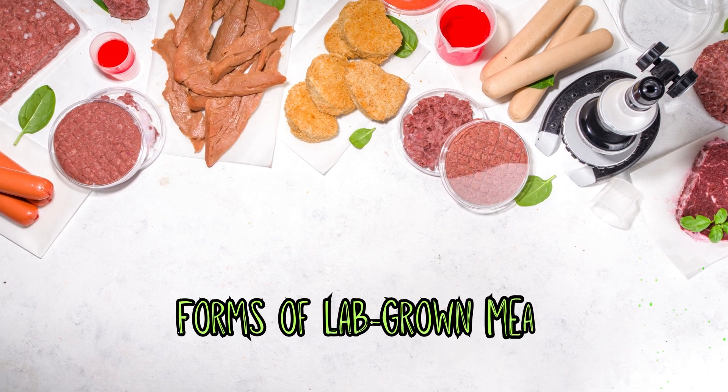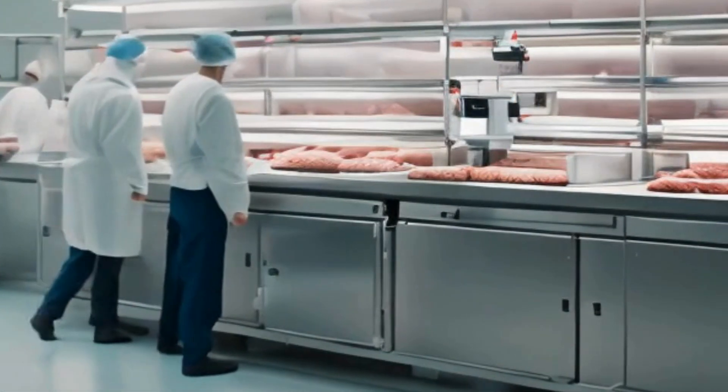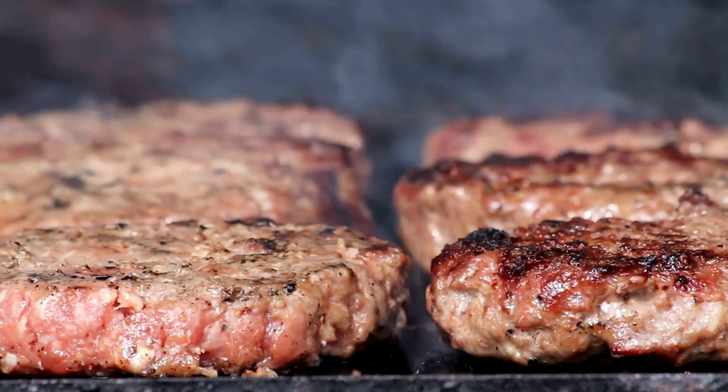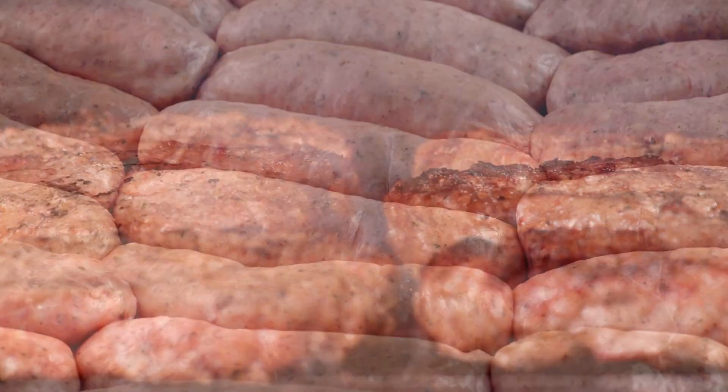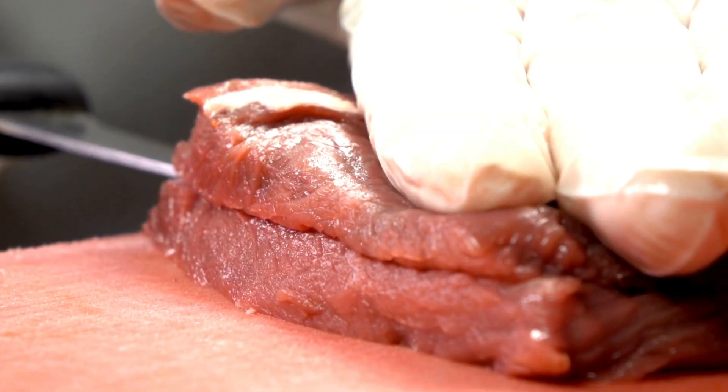Forms of lab-grown meat. Lab-grown meat can be produced in various forms to suit different culinary needs. From ground meat suitable for burgers and sausages to whole cuts like steaks and chicken breasts, the versatility of lab-grown meat is continually expanding.